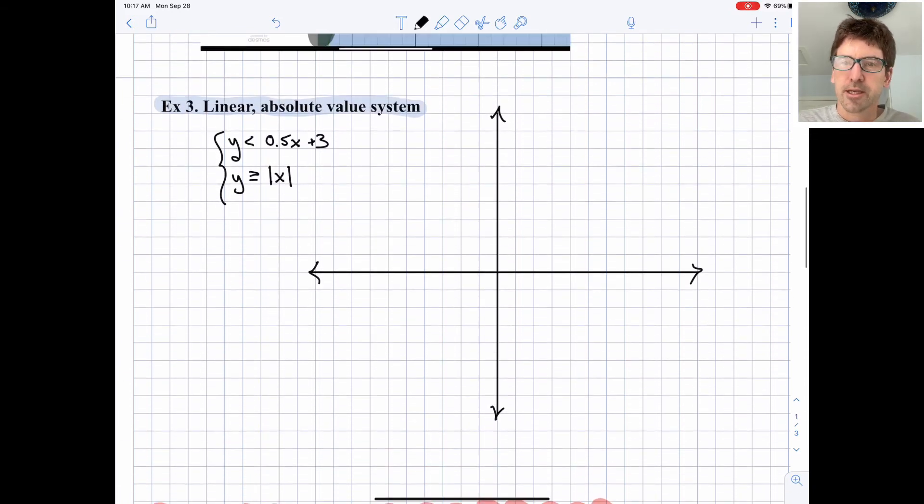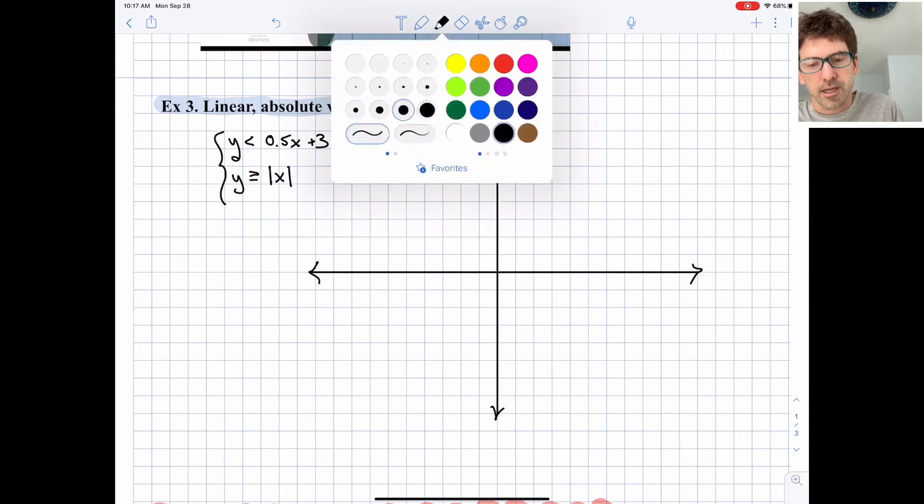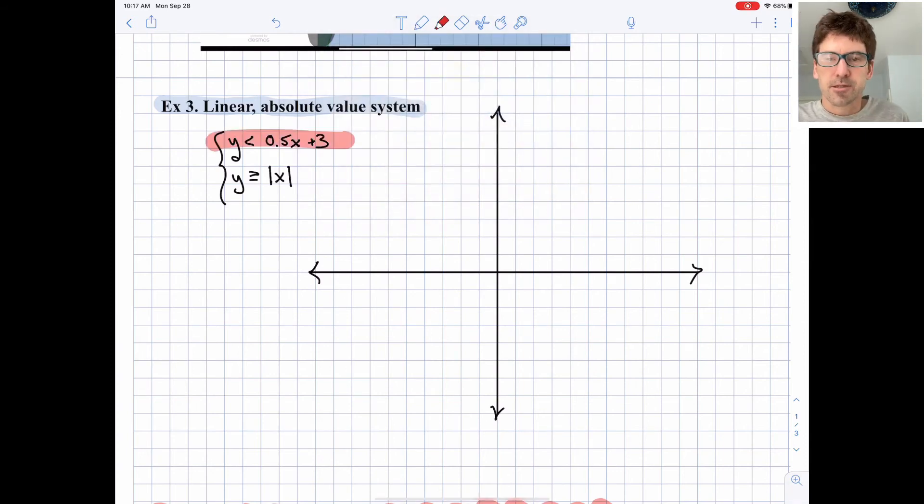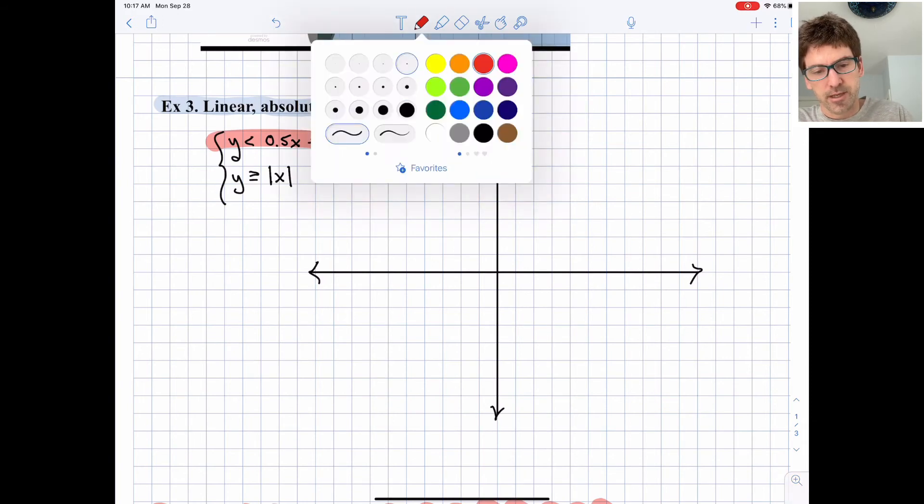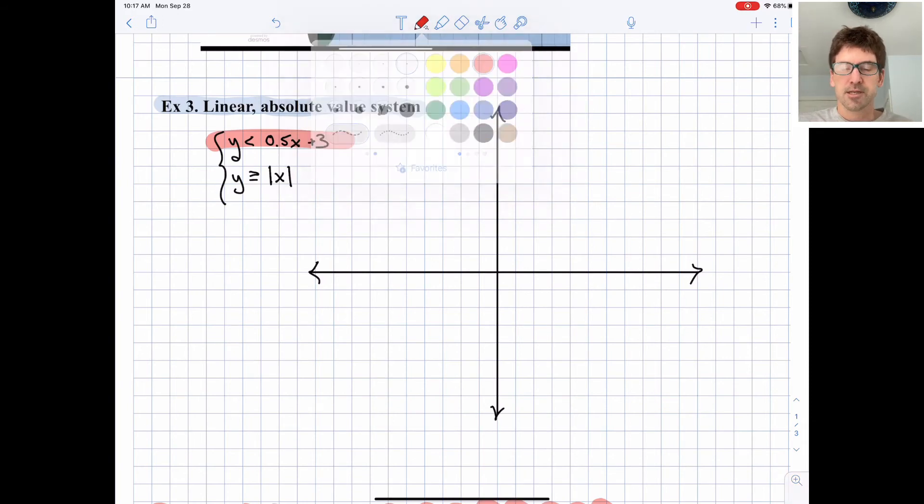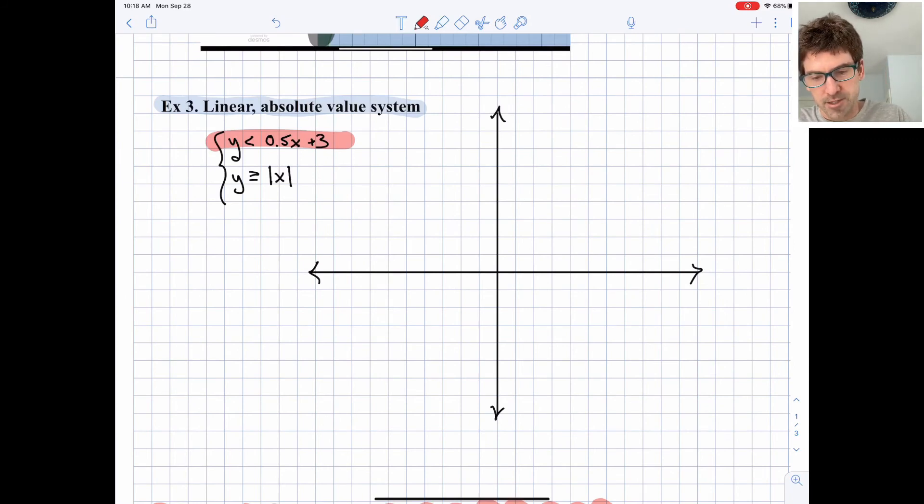Lastly, we'll look at a linear and an absolute value system. We'll graph both of these up here and then look at their regions of solution. First, we'll graph the inequality y < 0.5x + 3. That needs to be a dashed line because it's strictly less than, not less than or equal to.